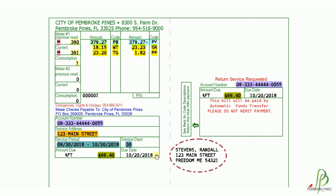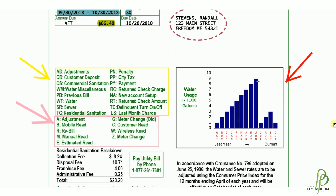You will notice we've added a new feature. This area shows the billing period date range, which indicates when your water meter was read last month and the current month. To help assist you in understanding your consumption and how it relates to prior months, on the back of the utility bill there's a graph of your consumption over the past year so that you can compare your consumption activity in prior months.